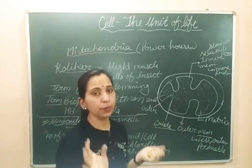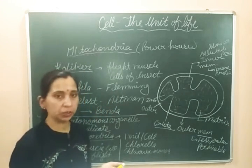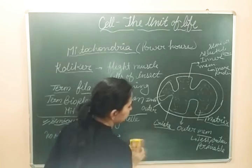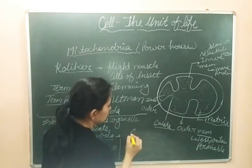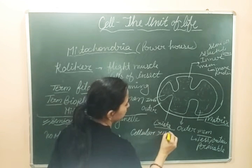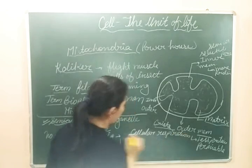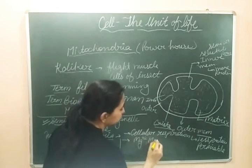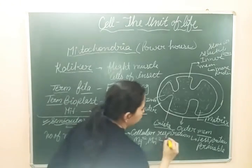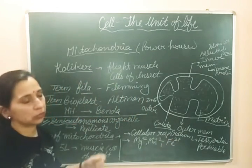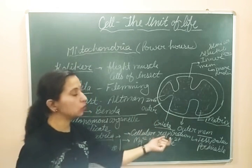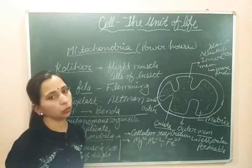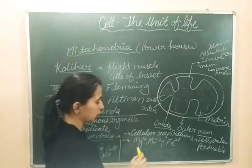The matrix contains a very large amount of enzymes responsible for cellular respiration. It also contains high amounts of divalent ions like magnesium ions and iron. These enzymes and ions are required for cellular respiration, enabling the production of energy in the form of ATP.